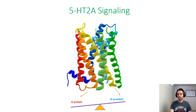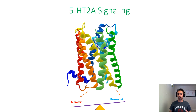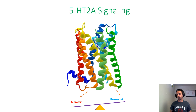We can think about these as a seesaw effect where one pathway can be activated more than another, and this is based on the structure of the drug. In this paper, what we're really looking at is the difference between the structure of the drug and the difference in how much it activates the G protein versus the beta-arrestin 2 pathway.